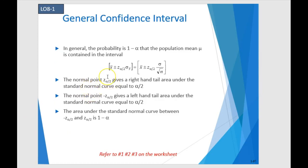The normal point z of alpha divided by 2 gives a right-hand tail area under the standard normal curve equal to alpha over 2. The normal point negative z alpha over 2 gives a left-hand tail area equal to alpha over 2. The area under the standard normal curve between negative z alpha over 2 and z alpha over 2 is 1 minus alpha. That sounds like a foreign language, but I'm going to draw a simple picture that should make this more clear.